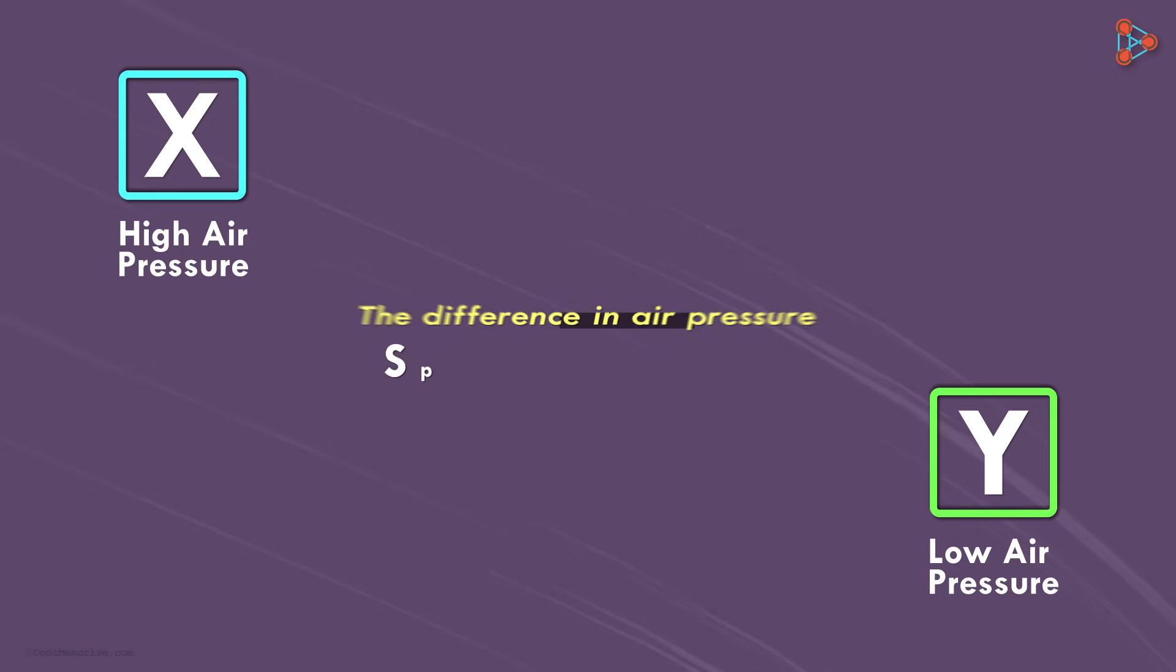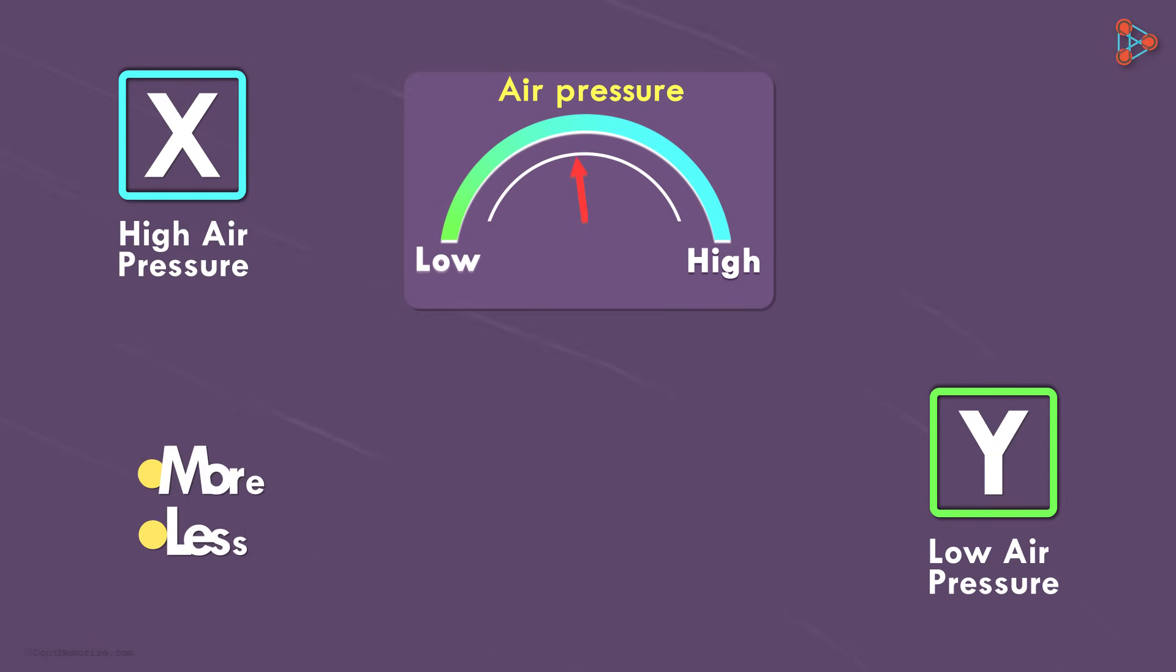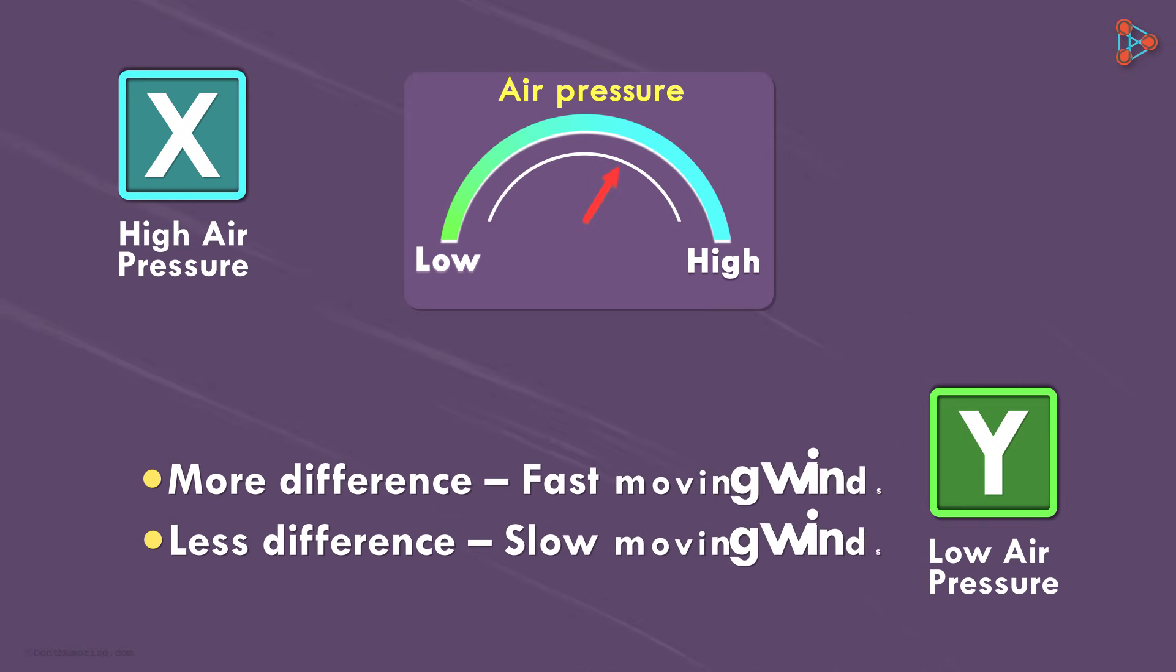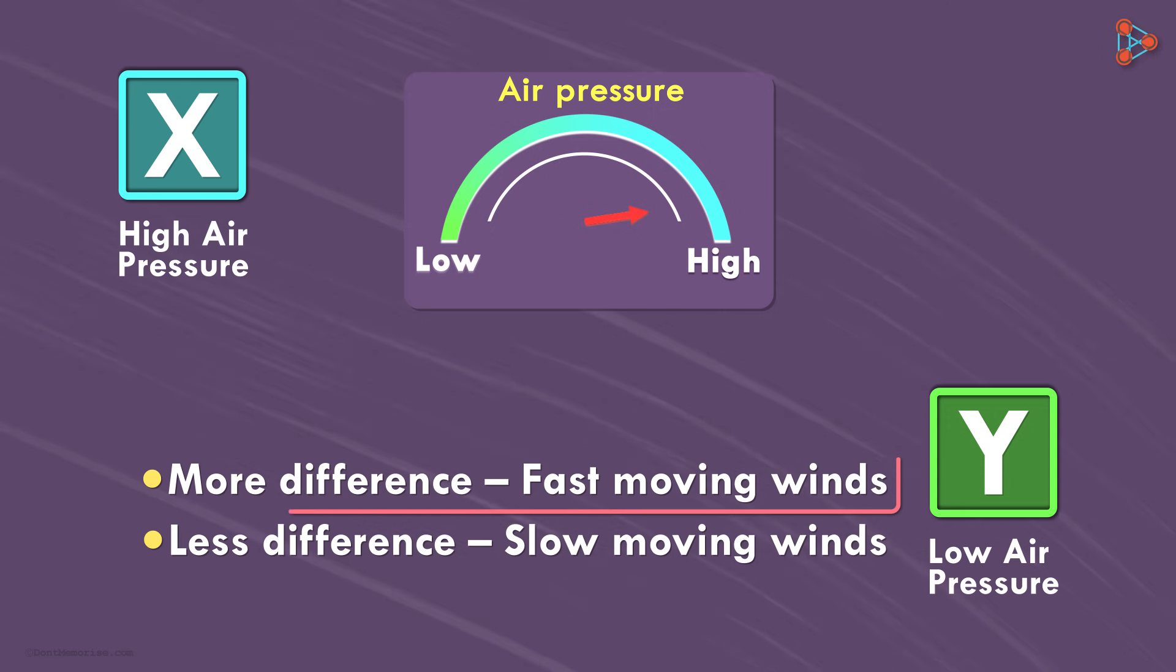But how does the speed of the wind increase or decrease? The answer is simple. If the difference in air pressure is more between the two regions, the air will move faster. The greater the difference, the faster the air moves.